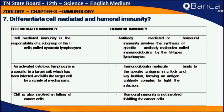Humoral immunity: antibody-mediated or humoral immunity involves the synthesis of specific antibody molecules called immunoglobulins by B-type lymphocytes. The immunoglobulin molecule binds to specific antigens in a lock-and-key fashion, forming an antigen-antibody complex to fight the infection. Humoral immunity is not involved in killing cancer cells.